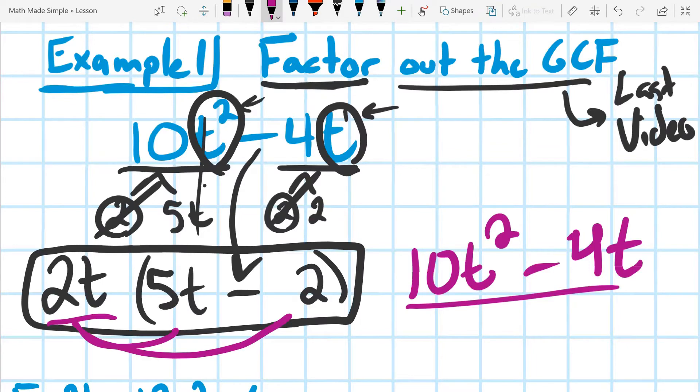So when we factor, we actually are going to end up with parentheses. And when we distribute, we get rid of the parentheses.